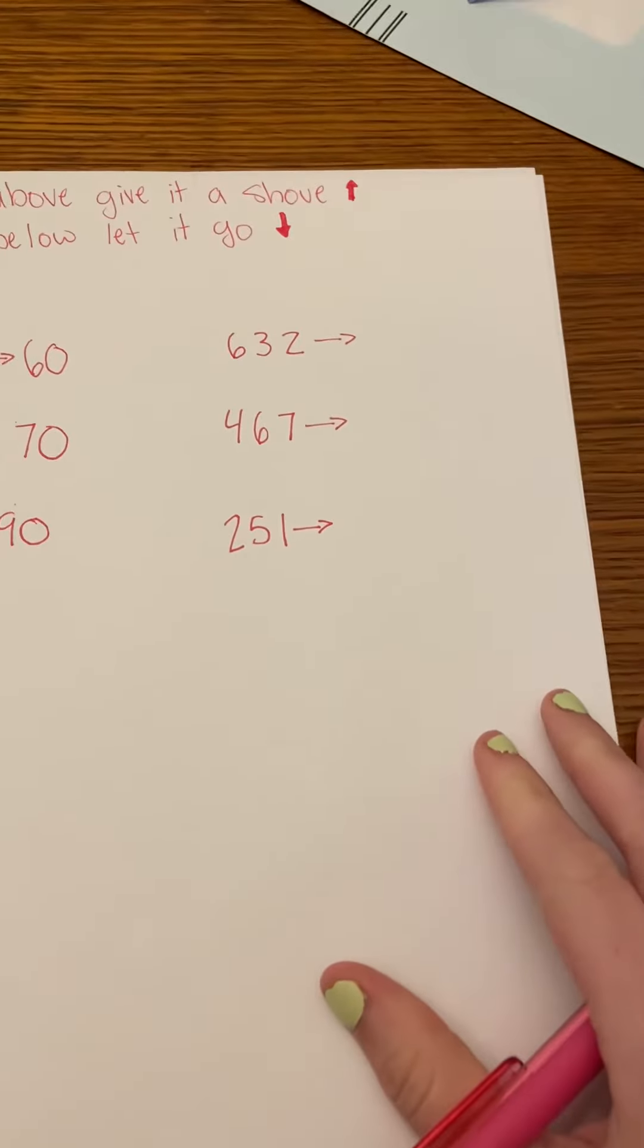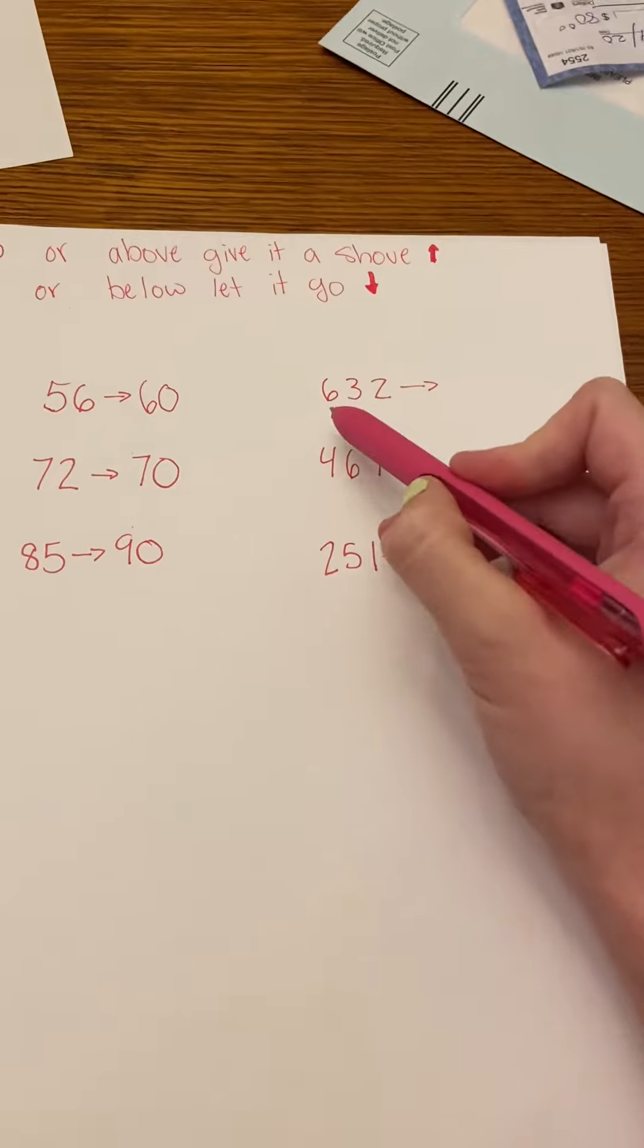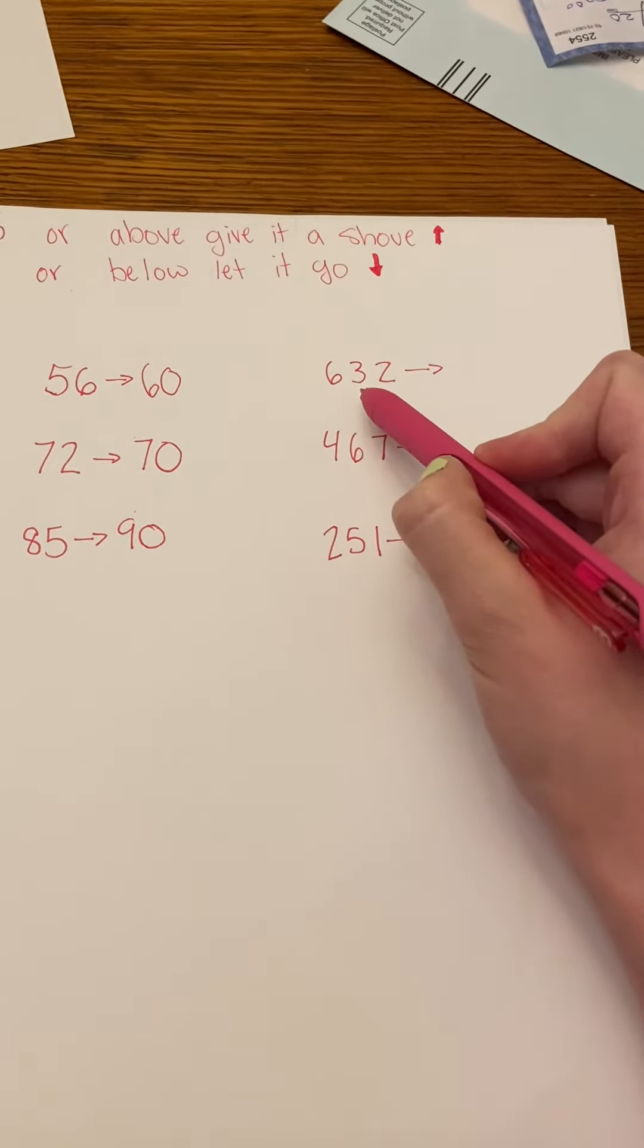So if I'm rounding to the nearest hundreds, this is very similar, except that I'm going to be looking at the number that's in the tens place.